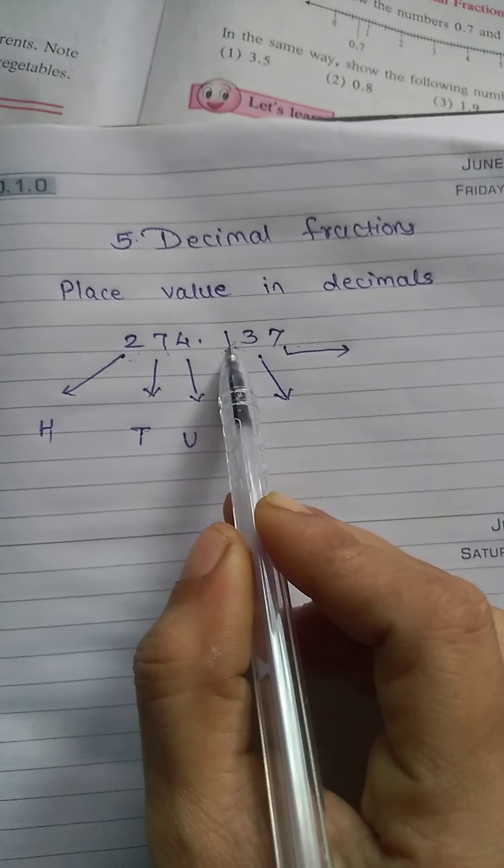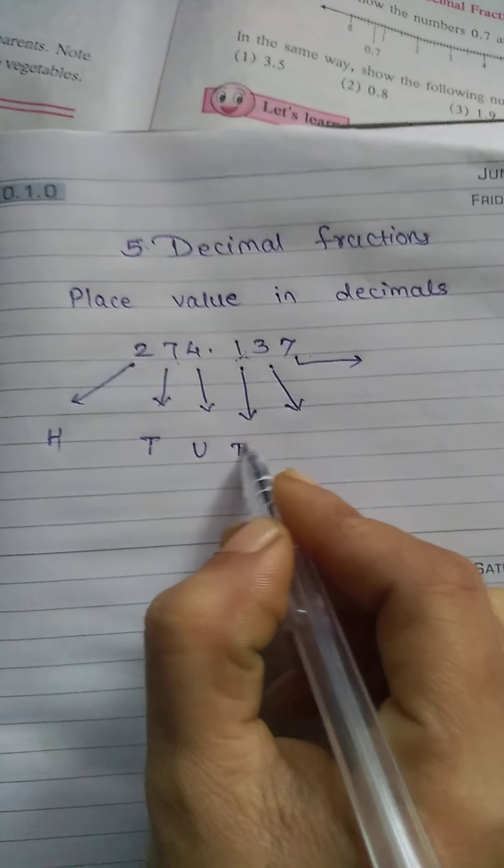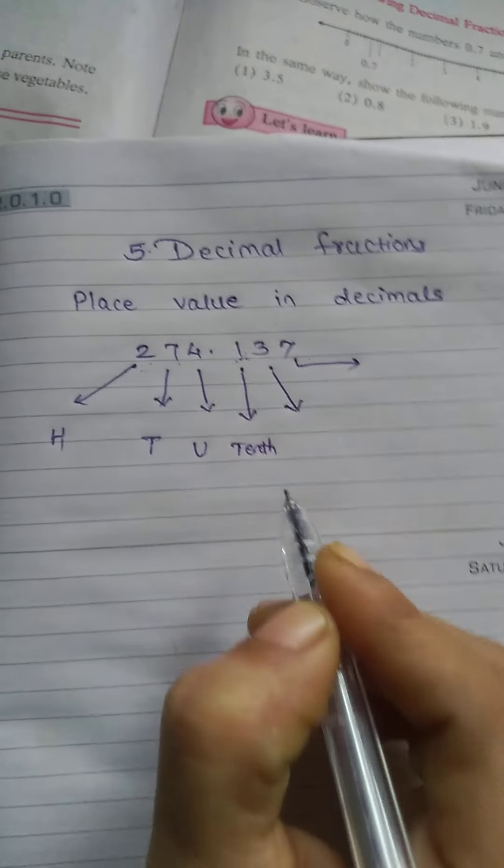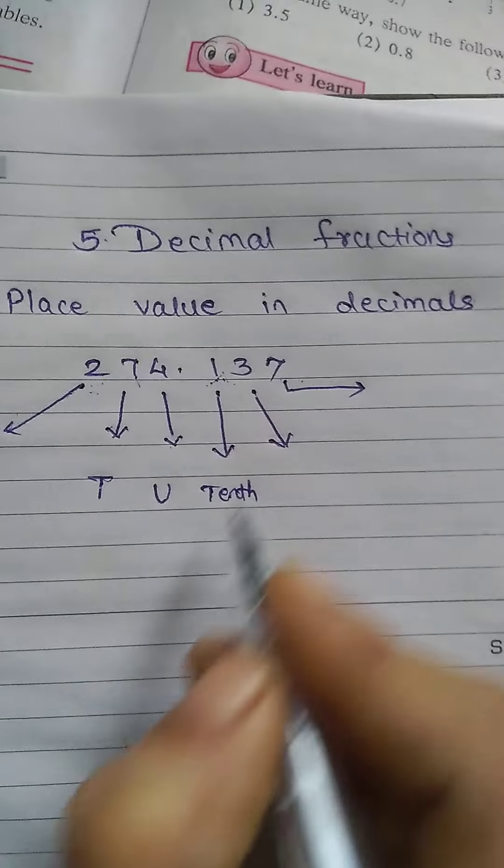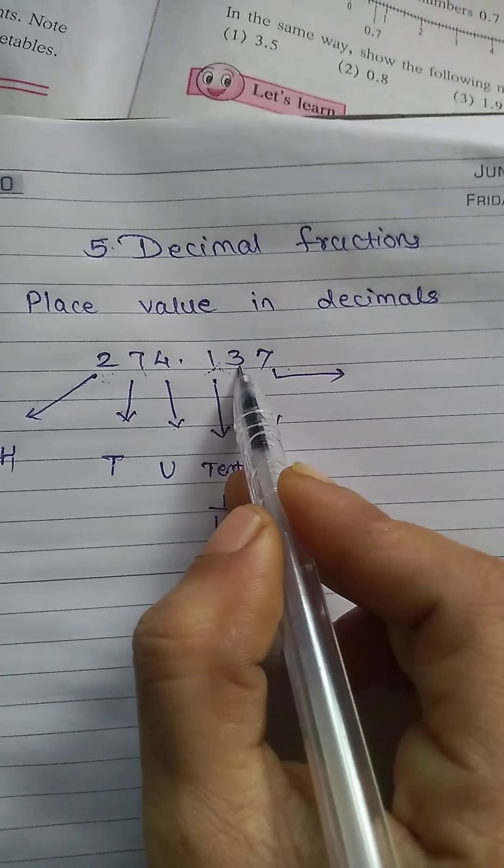It will be the tenth, T-E-N-T-H. Tenth means we can write here 1 upon 10. Now what will be the place value of this 3?